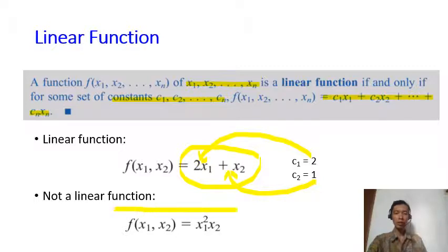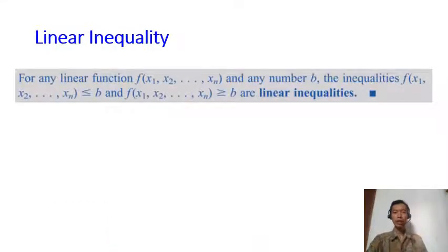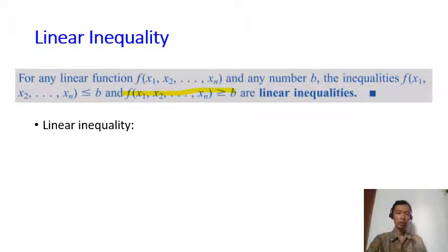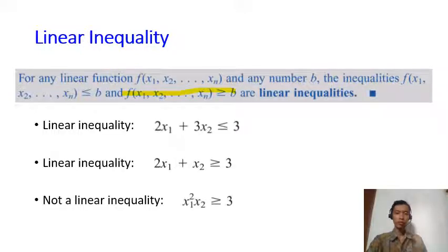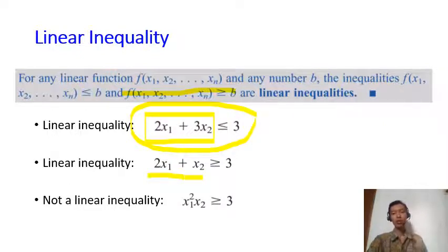Another example is not a linear function because it contains x1 squared times x2 — so it is not linear. If we have a linear function and a number b with an inequality, then we can say it is a linear inequality. The first two examples are linear inequalities, but the third one is not, because it is not a linear function.